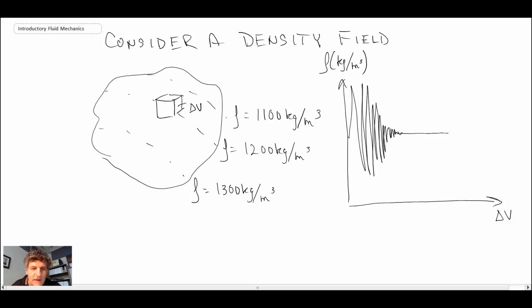Eventually, as delta V gets larger and larger—let's say it's a kilometer, two kilometers, three kilometers, four—we start getting macroscopic effects.